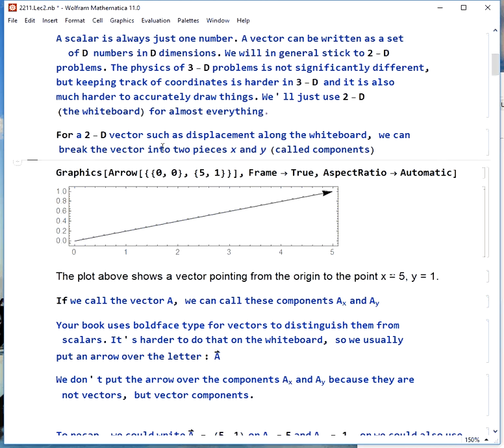We're going to have to break this vector, a given vector on the whiteboard, into two pieces, x and y, and we'll call them components. Here's an example of the vector. You can see it's 5 units long in the x direction and 1 in the y direction. We can call this vector A, and then we can call the components x and y, A sub x and A sub y.